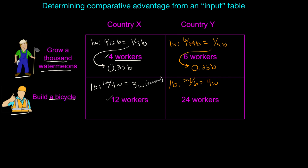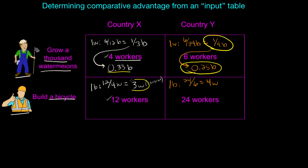We now have our opportunity costs for both countries. To determine comparative advantage, we identify who has the lower opportunity cost for each good. Country Y has a comparative advantage in watermelon production — it gives up only 0.25 bicycles per watermelon, compared to 0.33 in Country X. Country X has a comparative advantage in bicycle production, giving up only three thousand watermelons per bicycle, whereas Country Y gives up four thousand.